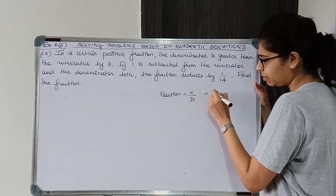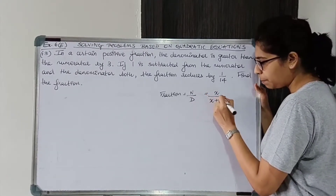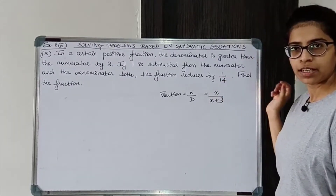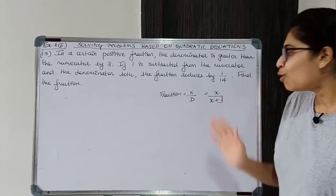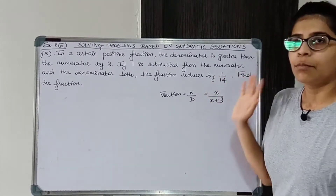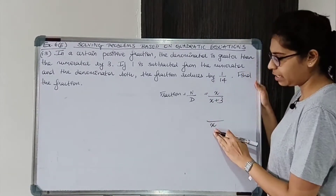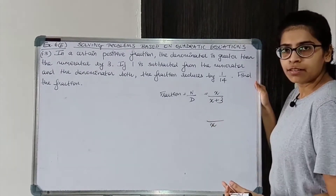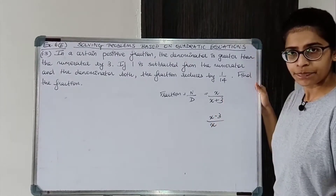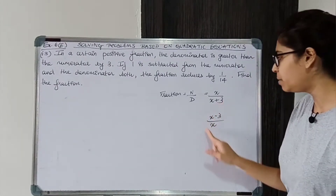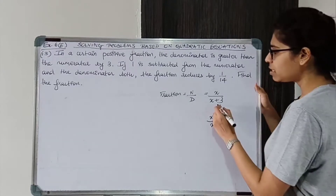If we take numerator as x, denominator will be x plus 3 — it is greater than numerator by 3. You can also take denominator as x, but that would not be preferable. You will still get the correct answer. If you take denominator as x, the numerator will be less than the denominator by 3. So this is the fraction x upon x plus 3.